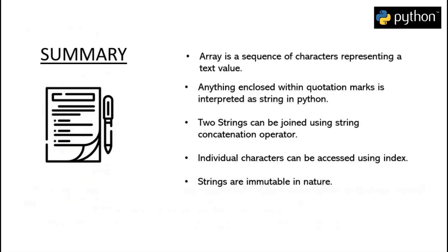To summarize our session: a string is a sequence of characters representing a text value in Python. Anything enclosed within quotation marks is interpreted as a string. Two strings can be joined using the string concatenation operator. Individual characters can be accessed using an index, and strings are immutable in nature. That's all for this session. We will meet again in the next session discussing the various methods that can be performed on strings. Thanks for listening.